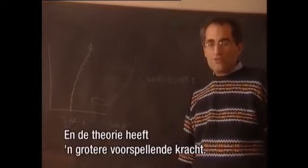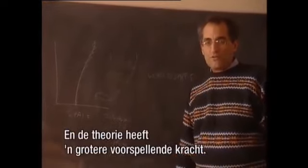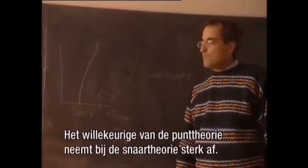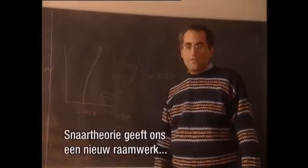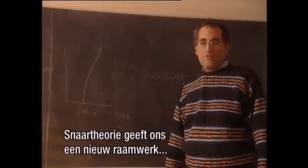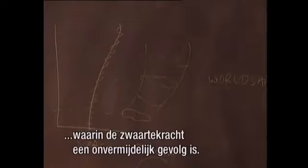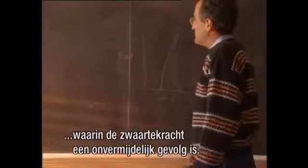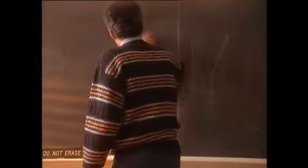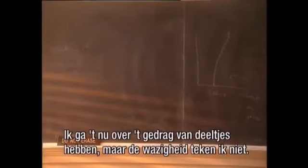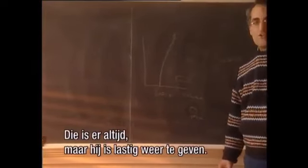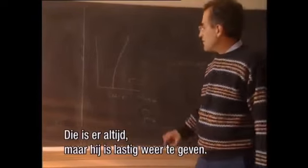Just this combination solves the problem for gravity the way the quantum mechanical fuzziness did for electricity. But it leads to a theory whose predictive power is much tighter. The arbitrariness that you've got in the standard theory is greatly reduced in the case of string theory, and that enables you to make statements that don't have an analog in the usual context, like the fact that gravity is an inevitable consequence.